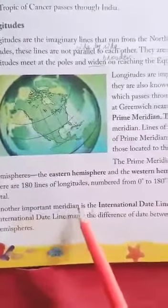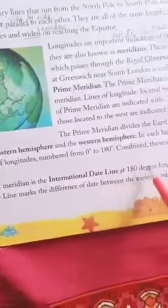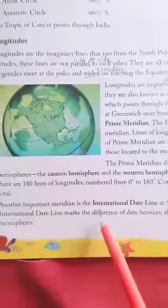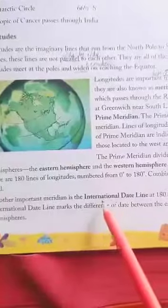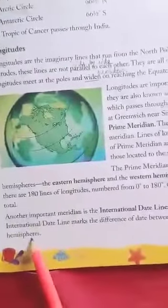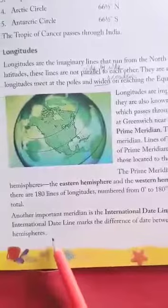Another important meridian is the International Date Line at 180 degrees longitude. The International Date Line marks the difference in date between the eastern and western hemispheres.